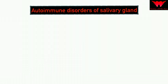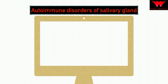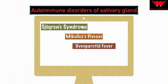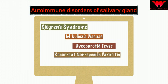Hello and welcome back. This is Dr. Noor Saira and this lecture will deal with the autoimmune disorders of the salivary gland. We're going to cover four important topics: Sjögren's syndrome, McCulloch's disease, uveoparotid fever, and recurrent nonspecific parotitis. These four topics are very often asked as two-marker or three-marker questions in dental examinations and are also favorite questions in the MDS entrance examination.